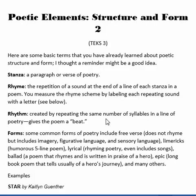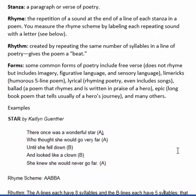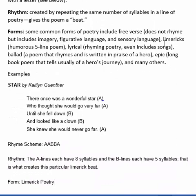You break the word into syllabic parts and count those for the beat. Forms are basically different types of poetry and the purpose for which they might be written. Common forms include free verse poetry, which doesn't rhyme but gives a lot of imagery, figurative language, and sensory language. Limericks are humorous five-line poems. Lyrical poetry is rhyming poetry — it even includes songs with a rhyme scheme and rhythm. A ballad is a poem that rhymes and is written in praise of a hero, like a longer story-poem. An epic is a very long book-length poem that usually tells about a hero's journey, like the Iliad and the Epic of Gilgamesh. These are the most common forms you have learned that will be assessed in English 1.